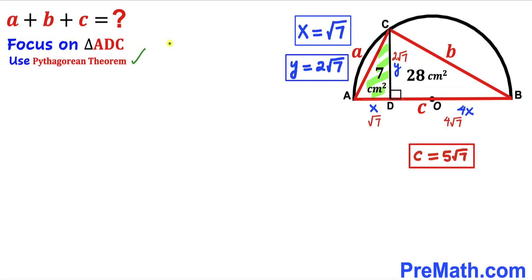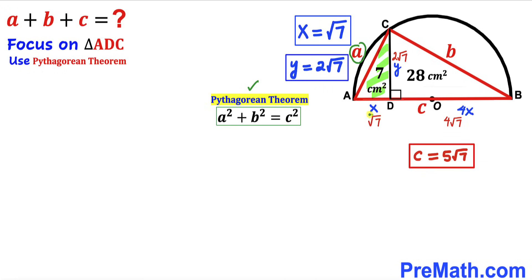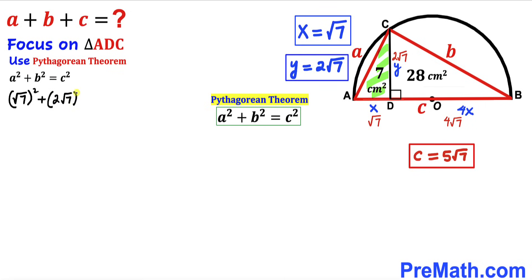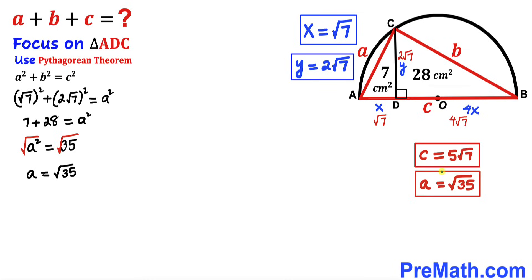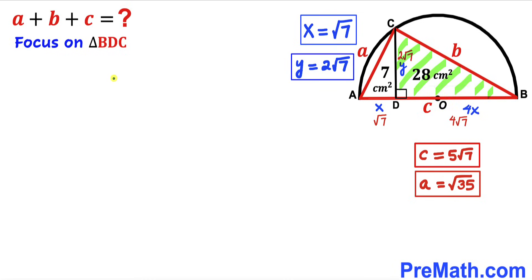Now let's apply the Pythagorean theorem to triangle ADC to find side AC, represented by lowercase a. The hypotenuse is a, and the two legs are √7 and 2√7. So a² = (√7)² + (2√7)² = 7 + 28 = 35. Therefore a = √35.